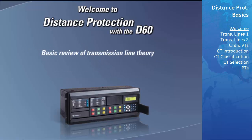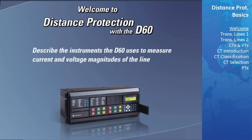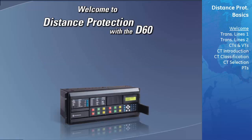This course will begin with a basic review of transmission line theory and then move on to describe some of the various instruments that the D60 uses to measure the current and voltage magnitudes of the line. Then the student will proceed through the fundamental theory of distance protection and the different types of distance protection zones that are commonly used.